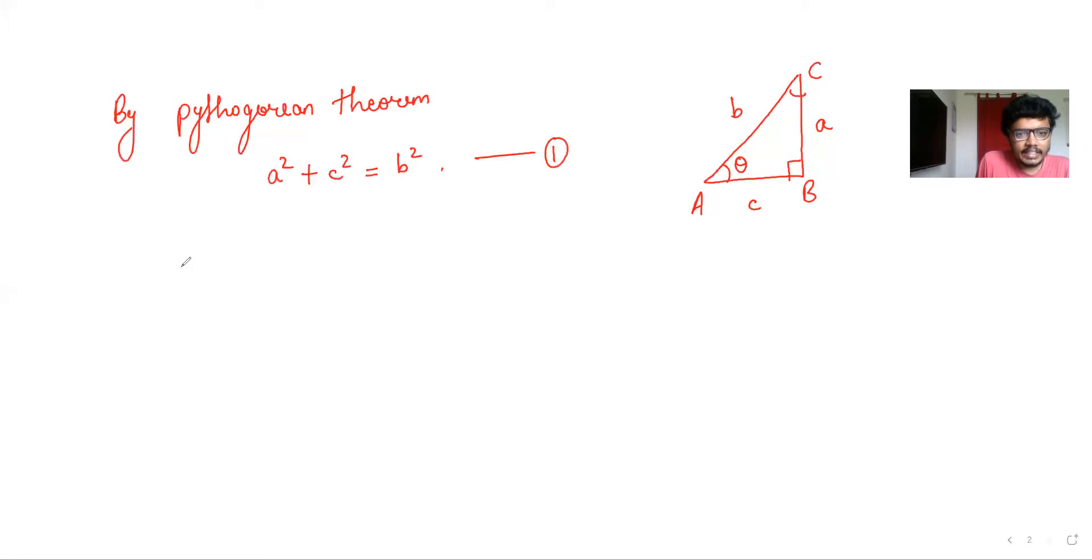So what is the definition of sin θ? By definition, sin θ is opposite side by hypotenuse.